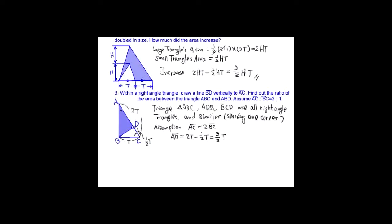Because it's a similar triangle, the ratio of the sides are same. AD equals 3 over 2T. Triangle ADD area is 1 over 2 H times 3 over 2T. Triangle ABC's area is HT because the height is 2H.